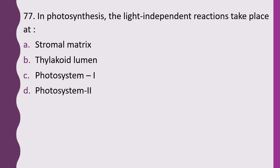Question 77. In photosynthesis, the light-dependent reaction takes place in: stromal matrix, thylakoid lumen, photosystem I, or photosystem II. Note: the question then asks about the light-independent reaction. The correct answer is option A — the light-independent reaction takes place in the stromal matrix.